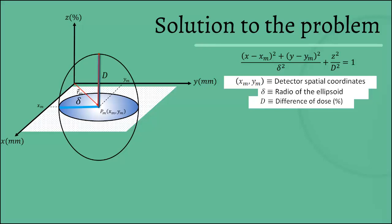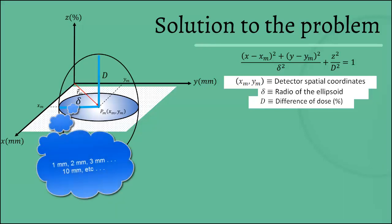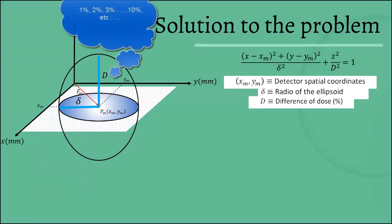Both values are determined by us. Delta could be 1 mm, 2 mm, or any value. And D could be 1%, 2%, or any value. They're character values of our ellipsoid of revolution.